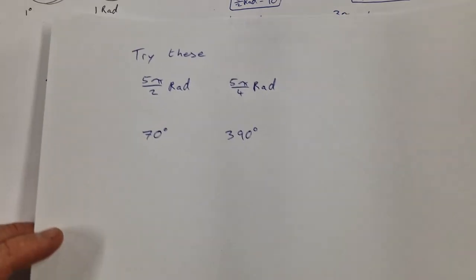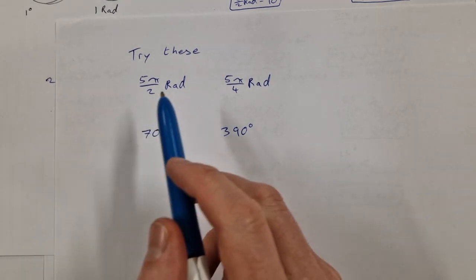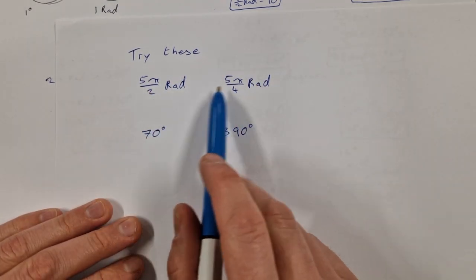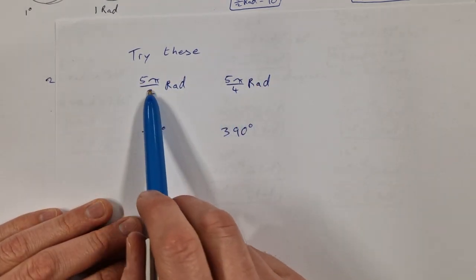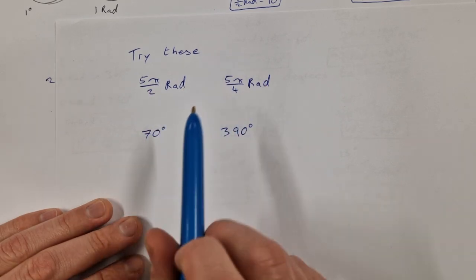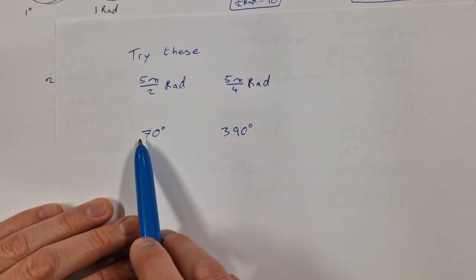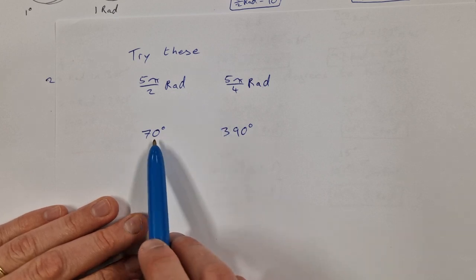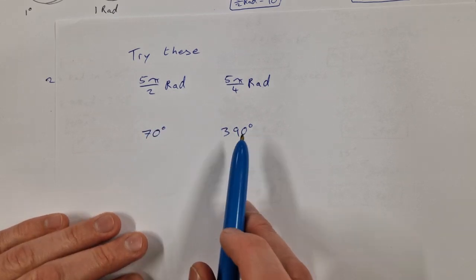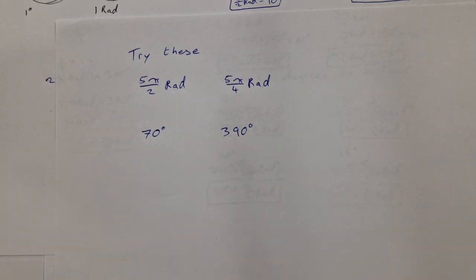Here are a few for you to try. Convert from radians to degrees: 5π/2 radians and 5π/4 radians. Then convert from degrees to radians: 70 degrees and 390 degrees. Stick your answers in the comments below and check with others to see if you got them right.